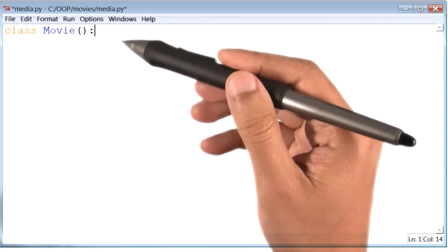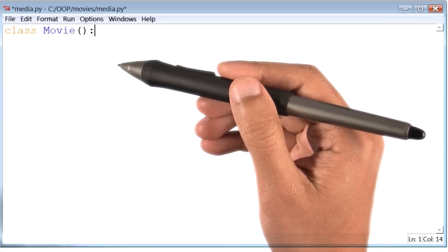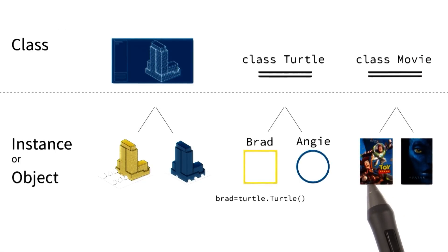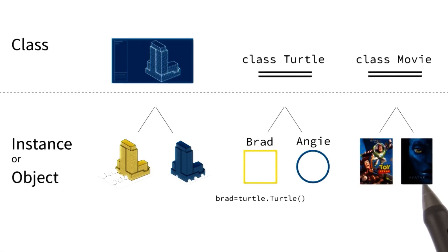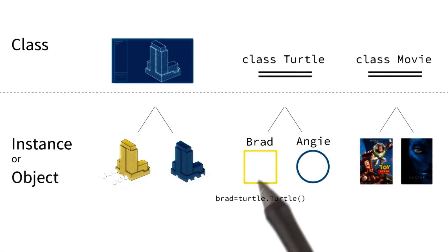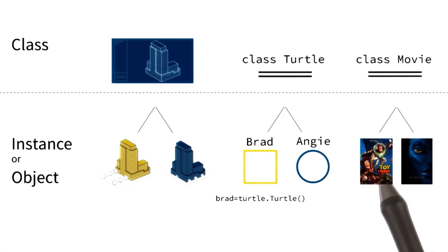You may have noticed that our class is empty thus far. To figure out what I want to do next with it, I will go back to my design. I know that eventually I would want to create multiple instances of the class Movie — instances like Toy Story and Avatar. I also know that I've previously created instances of class Turtle, instances like Brad. And to do that, I had to write a piece of code that read turtle.turtle. So I guess I will have to write a piece of code like this to create Toy Story, an instance of class Movie. Let's do that next.